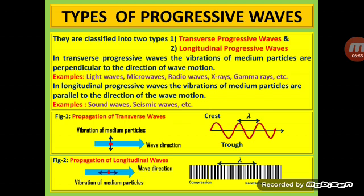In longitudinal progressive waves, the vibrations of the medium particles are parallel to the direction of wave motion, as shown in Figure 2. These waves advance through the medium in the form of compressions and rarefactions. Compressions are the regions in space with maximum pressure and density, whereas rarefactions are the regions with minimum pressure and density. Some examples for longitudinal waves are sound waves and seismic waves.